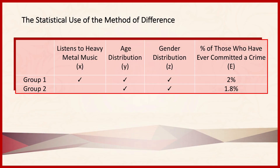Here we have a table showing the statistical use of the method of difference. We have two groups, and the question we're considering is whether listening to heavy metal music contributes to the committing of crimes. The first group is comprised of people who listen to heavy metal music; the second group is comprised of people who do not. We want to make sure the groups are statistically similar with respect to age distribution, gender distribution, and any other variables that might influence whether people commit crimes. Roughly 2% of people in group 1 have committed crimes, while only 1.8% of people who do not listen to heavy metal music have committed a crime.